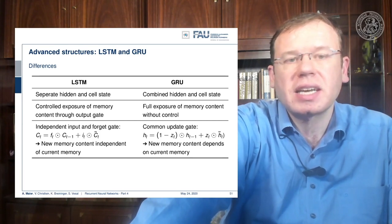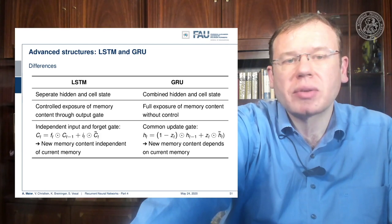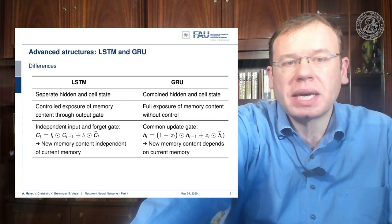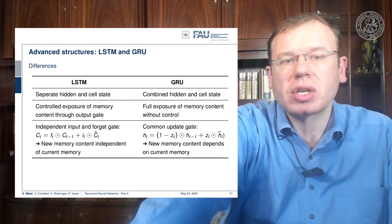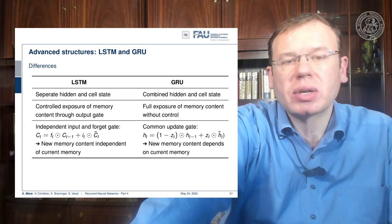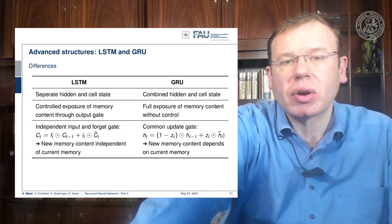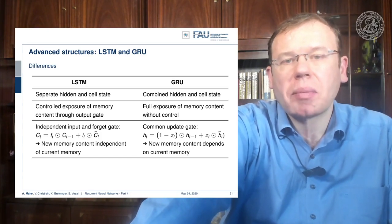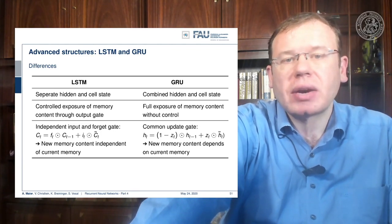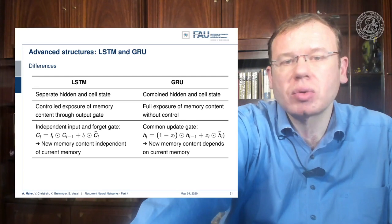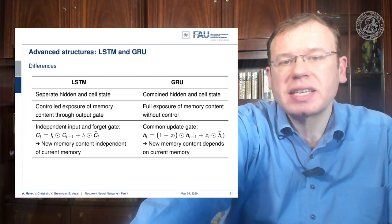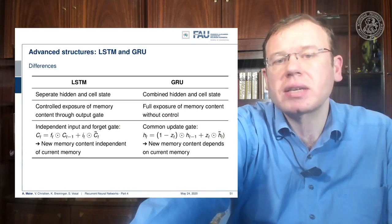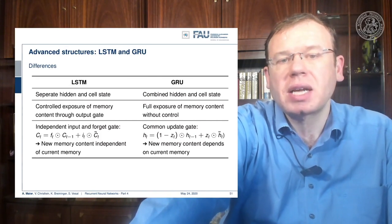The differences: LSTMs have separate hidden and cell state, controlling exposure of memory content through an output gate, with input and forget gates working independently — so new memory content is independent of current memory. In the GRU we have a combined hidden and cell state with full exposure of memory content without control. There is one common update gate with variable z_t that decides to either use the old state or the proposed update, so new memory content depends on current memory.